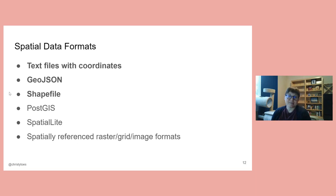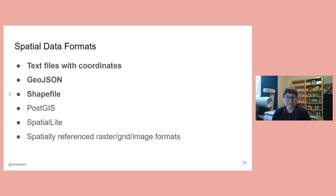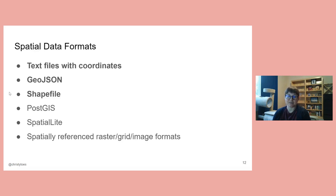Spatial data can come in many formats: text files, Excel, or CSV with X and Y coordinate columns; GeoJSON and Shapefile are open standard formats for vector geographic features — points, lines, and polygons. Data can be in a spatial database like PostGIS or SpatialLite, or in an image format representing continuous surfaces like national land cover, weather, or elevation. I'm going to demonstrate working with text files, GeoJSON, and Shapefile specifically.